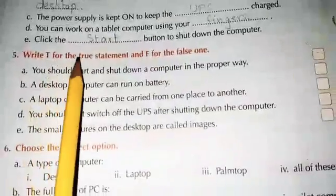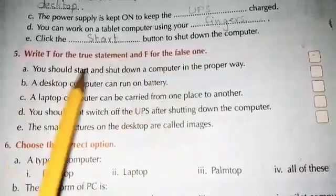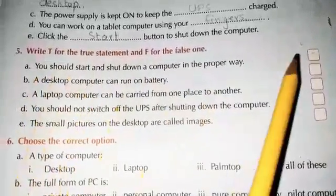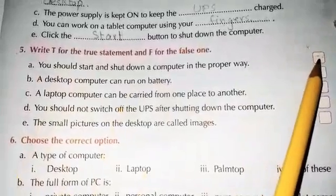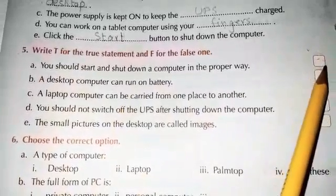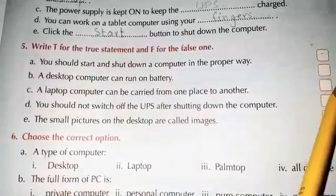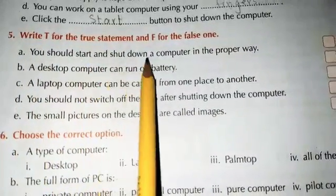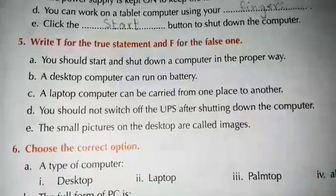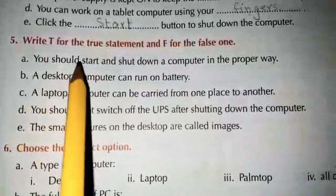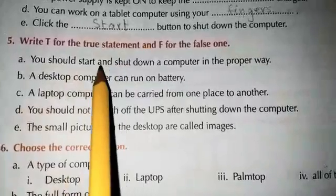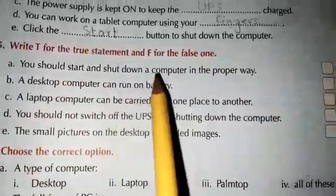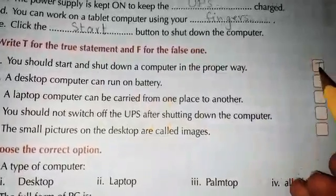Question number 5: write T for a true statement and F for a false statement. Which statements are correct? Write T, and which are wrong? Write F. A: You should start and shut down a computer in a proper way. Is this true? Yes — it is true. Write T here.